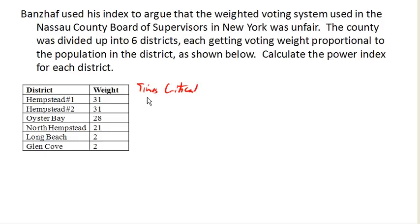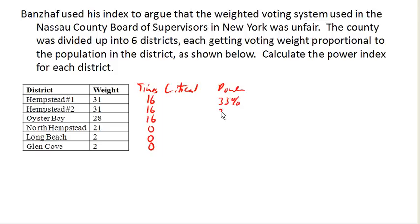It turns out that each of these three players is critical 16 times, and each of these other players is critical 0 times. So it turns out that in terms of power, these first three districts each have about 33% of the power — they each have one third, or equal shares of the power — and these other three districts have no power at all in the coalition.